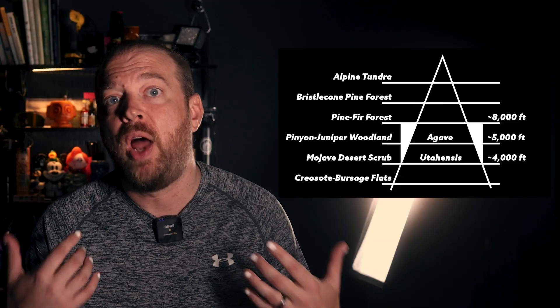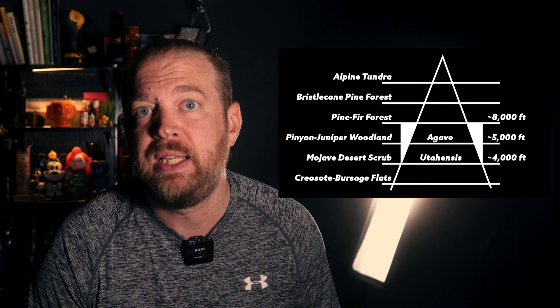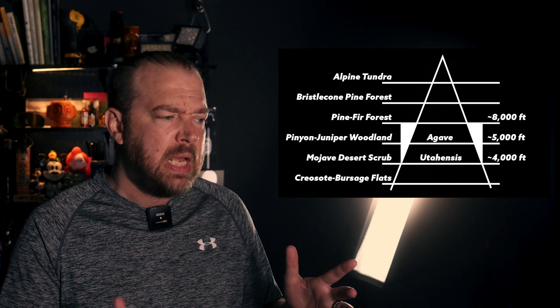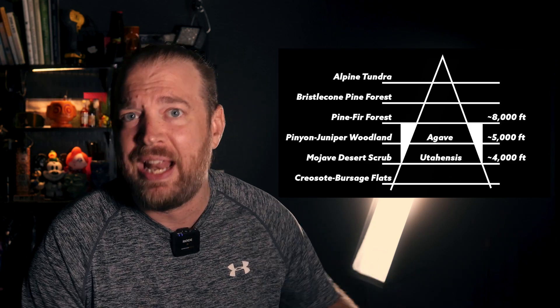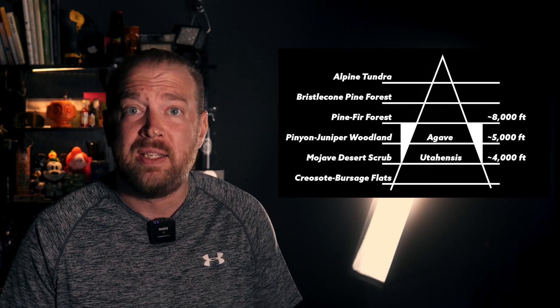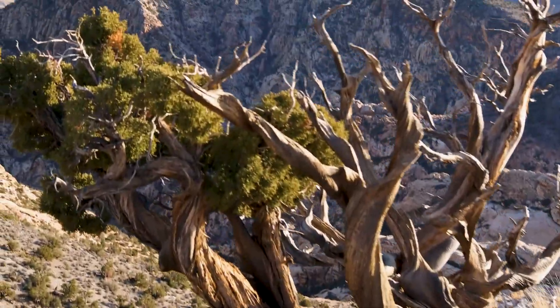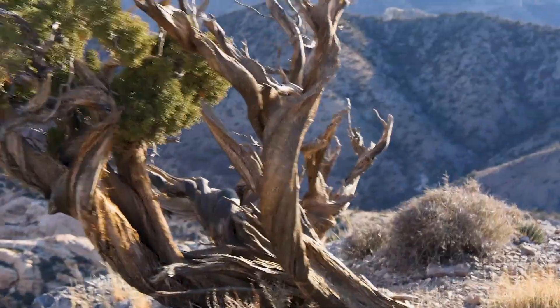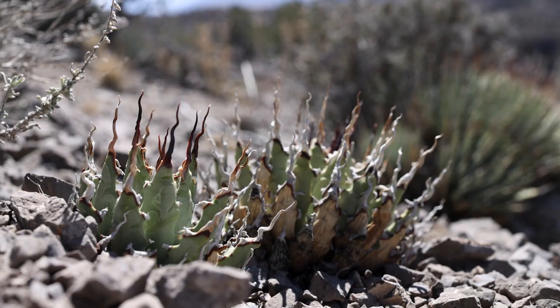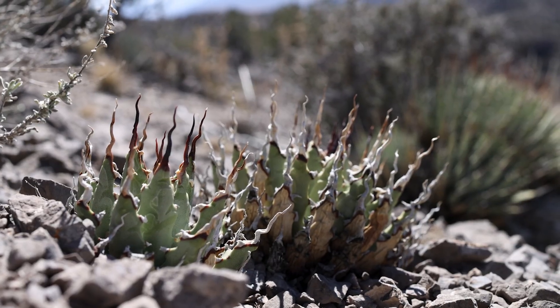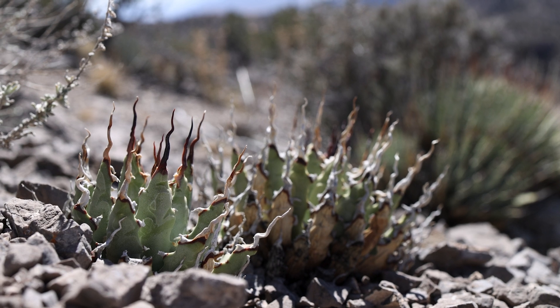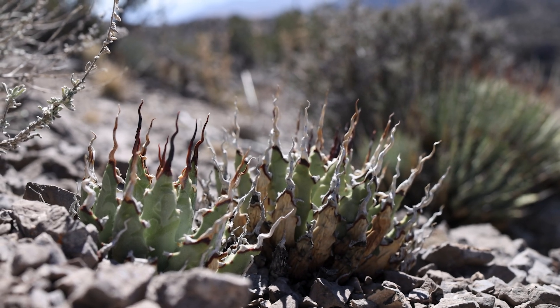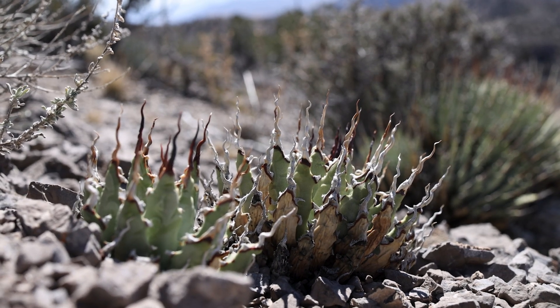The next life zone up is called the pinyon-juniper woodland, and that typically is between about 5,000 and 8,000 feet, where you see a lot of short pinyon pine and juniper trees. You see quite a bit of that same cactus mentioned before, and you also see quite a bit of agave utahensis. In fact, a lot of the photography I do and post on my various accounts comes from the pinyon-juniper woodland.